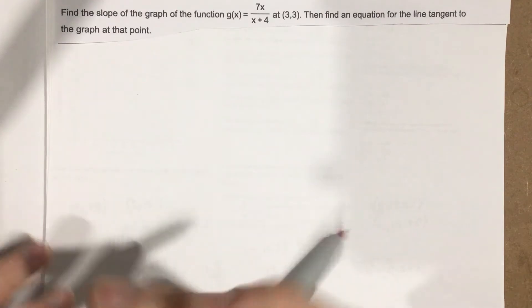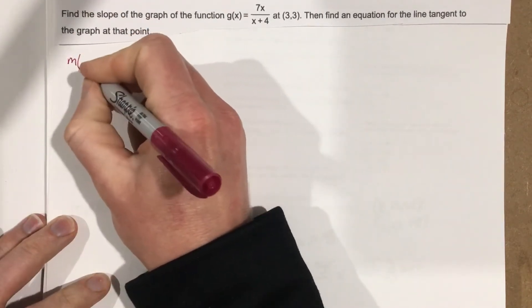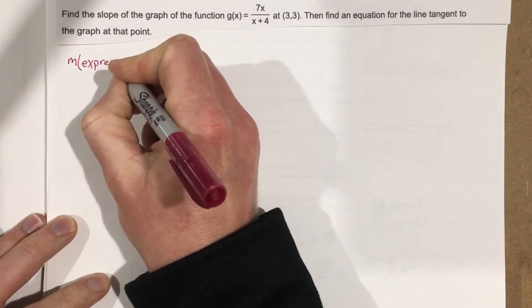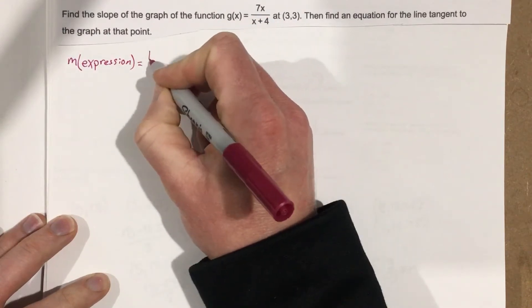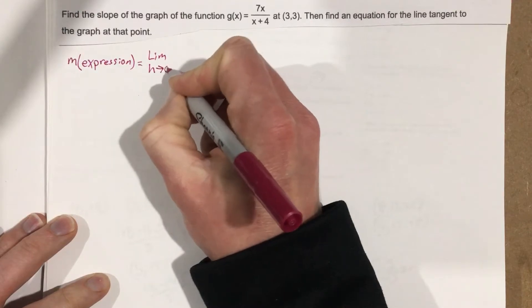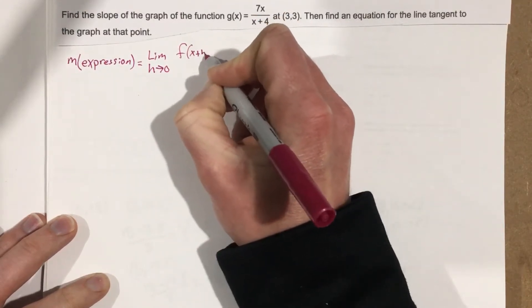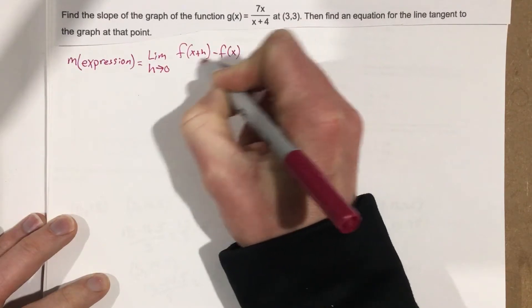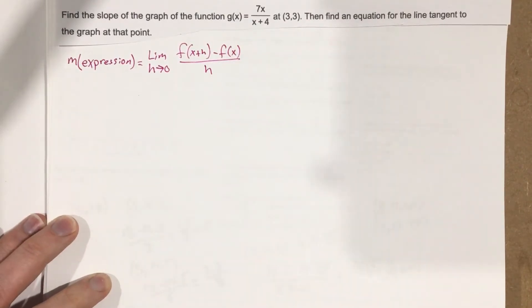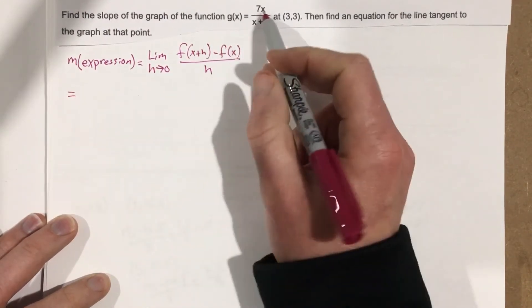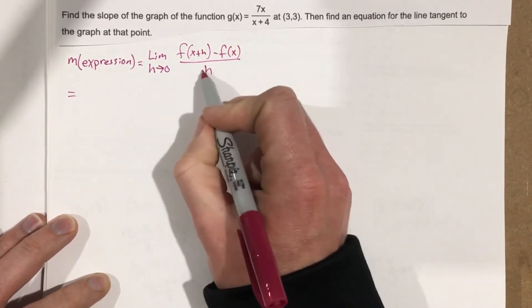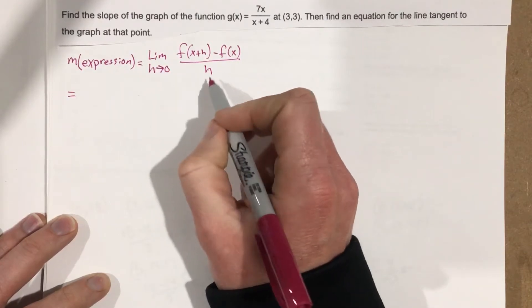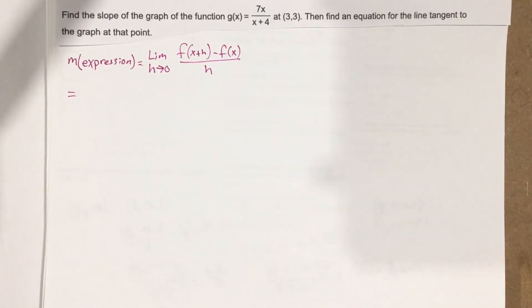Let's start by finding the slope expression for this function. We find that slope expression by doing the limit as h approaches zero of f of x plus h minus f of x, all over h. We're going to plug x plus h into the function and then plug x into that function. Our goal is to cancel out this h, because when we plug zero in we divide by zero, which is undefined.